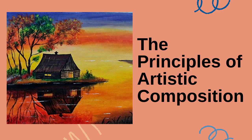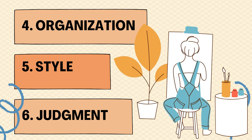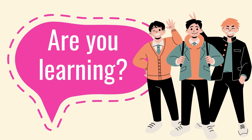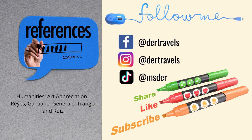Again, the six principles of artistic composition are: subject of art, function of art, medium of art, organization, style, and judgment. I hope you are learning. If you have questions or clarifications, please address them in our face-to-face session. Thank you and have a great day. Bye bye!